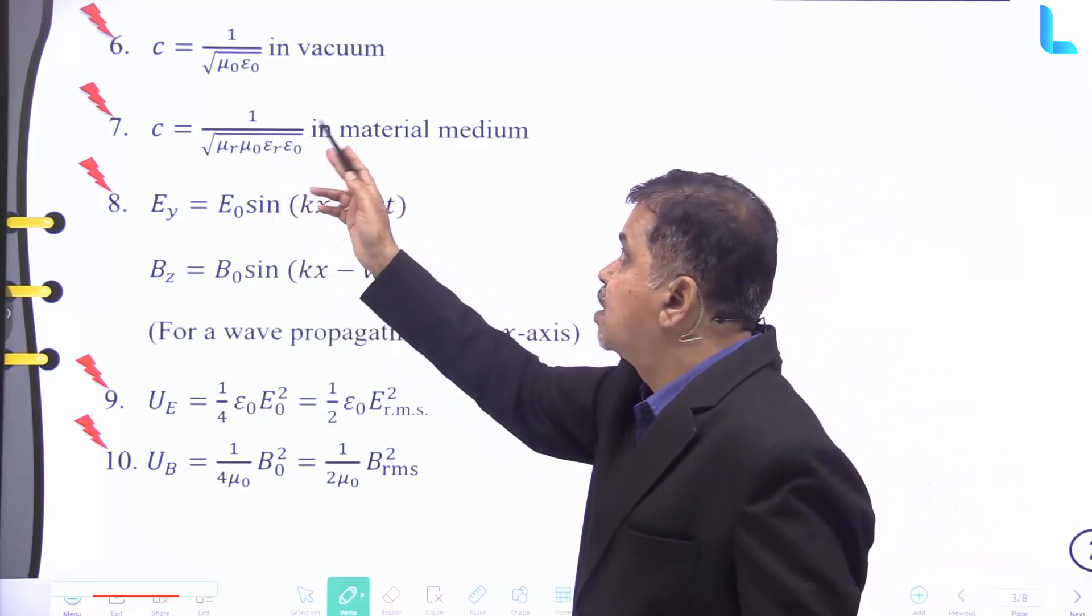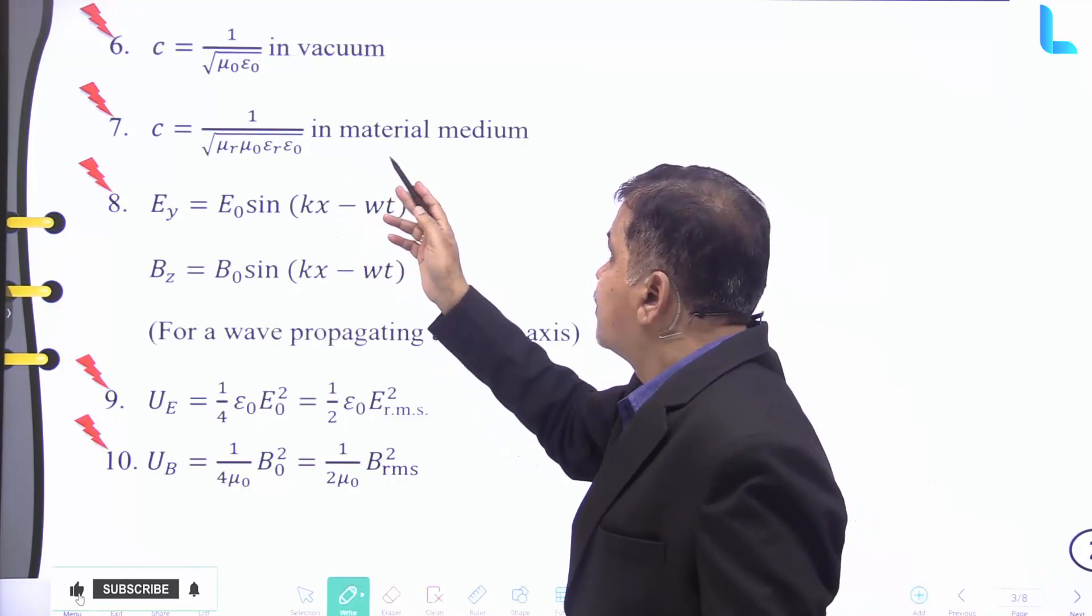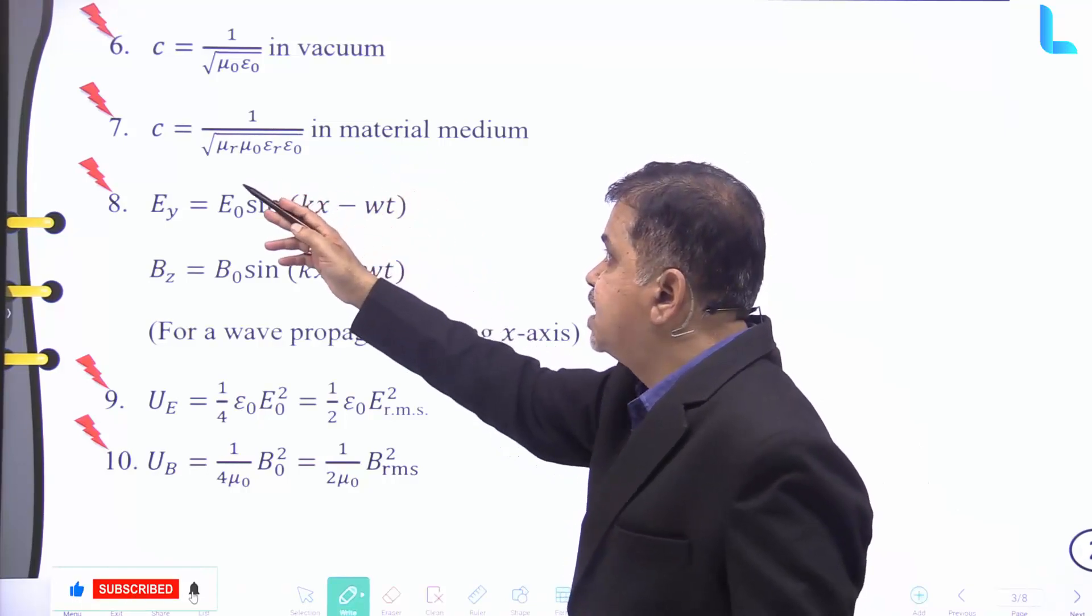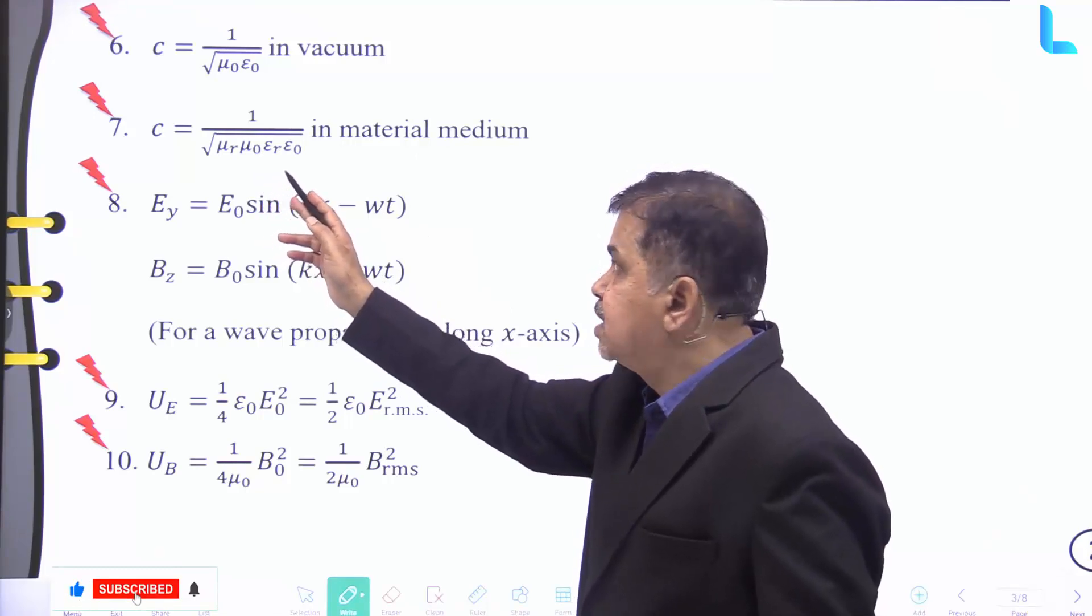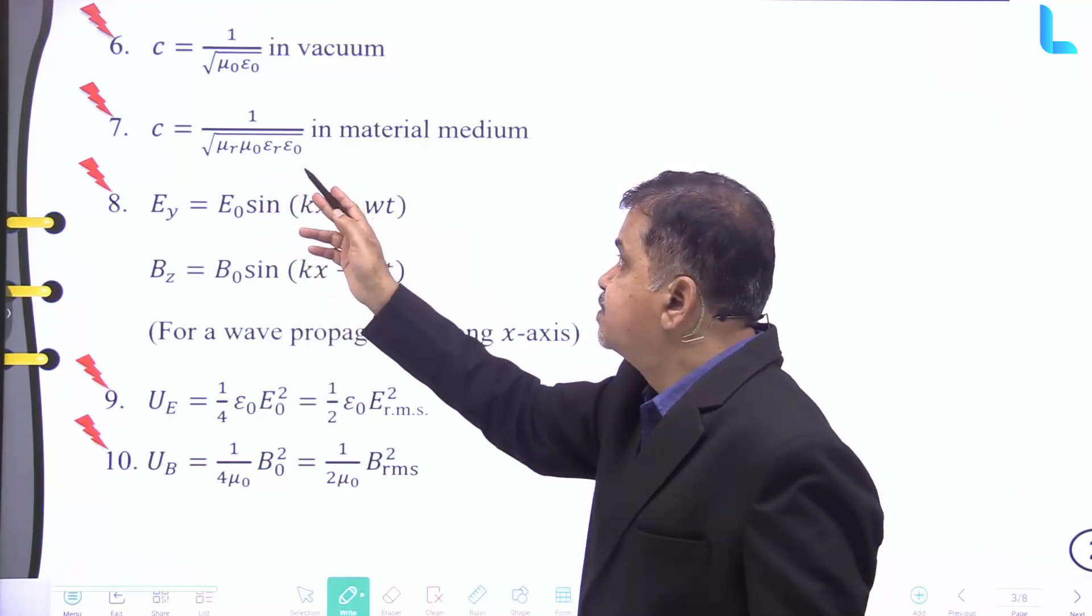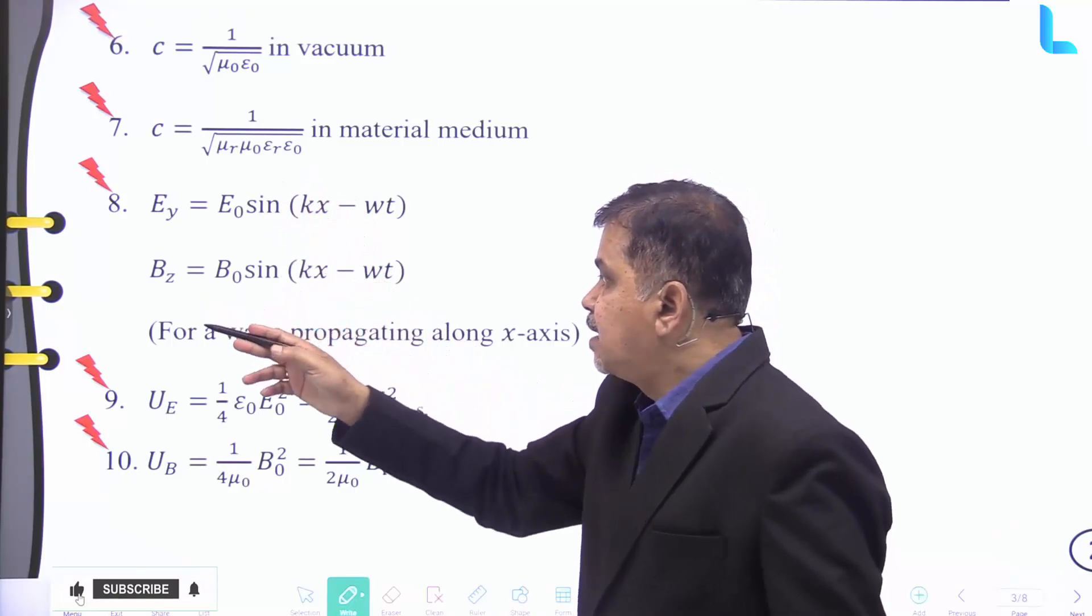For in a material medium we have c equal to 1 divided by square root of μᵣ into μ₀ into εᵣ into ε₀.